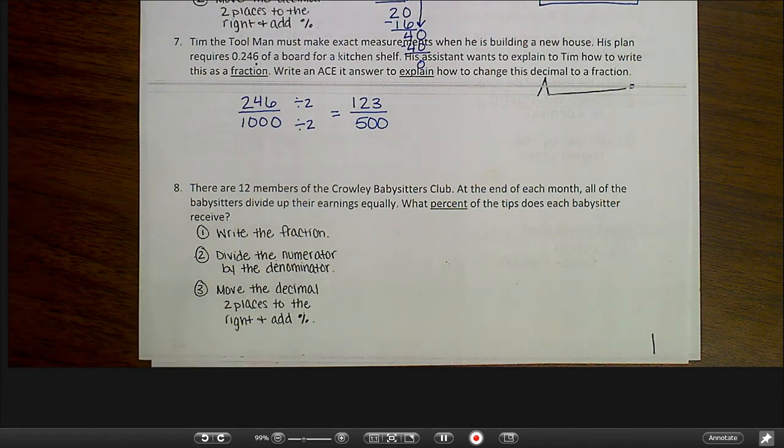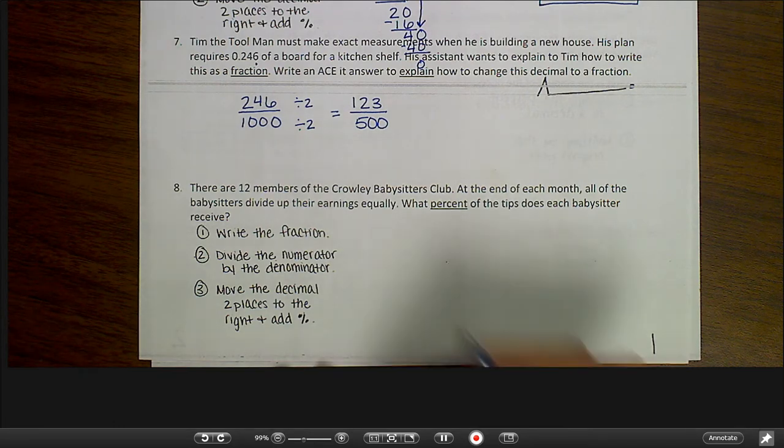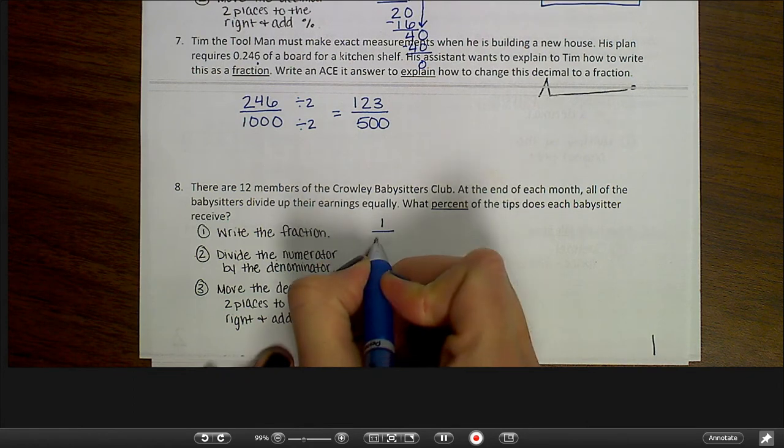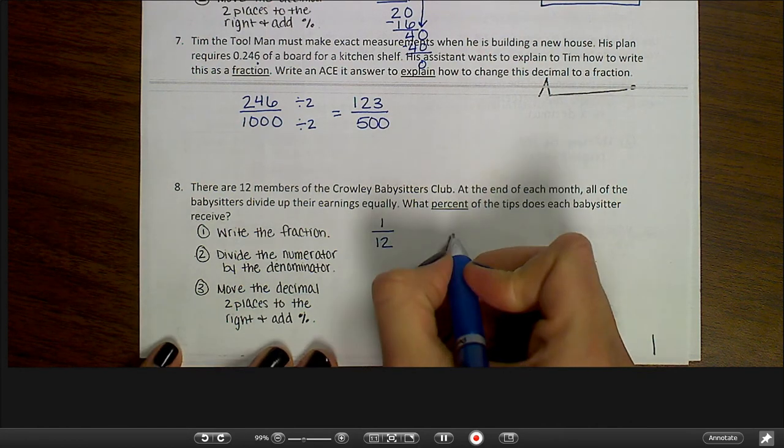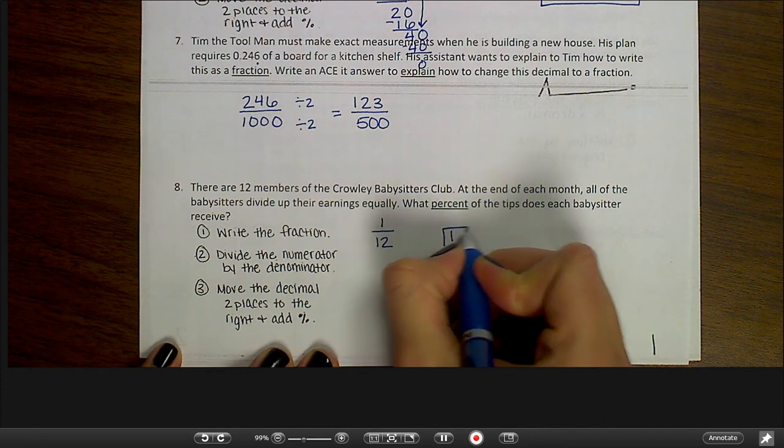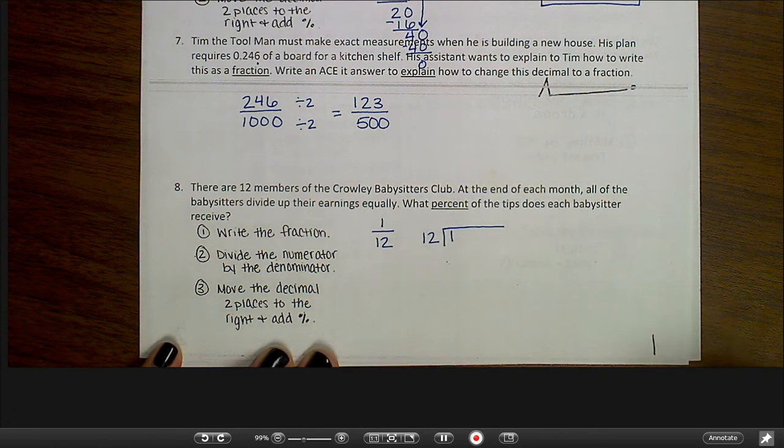Number eight. There are twelve members of the Crowley Babysitter's Club. At the end of each month, all of the babysitters divide up their earnings equally. What percent of the tips does each babysitter receive? So first, I need to write the fraction. I don't need to know how much money they actually make, because I just need to know what percent of the total they're making. So if there are twelve babysitters, and each one gets an equal amount, my fraction is 1/12. For step two, I'm going to divide the numerator by the denominator.